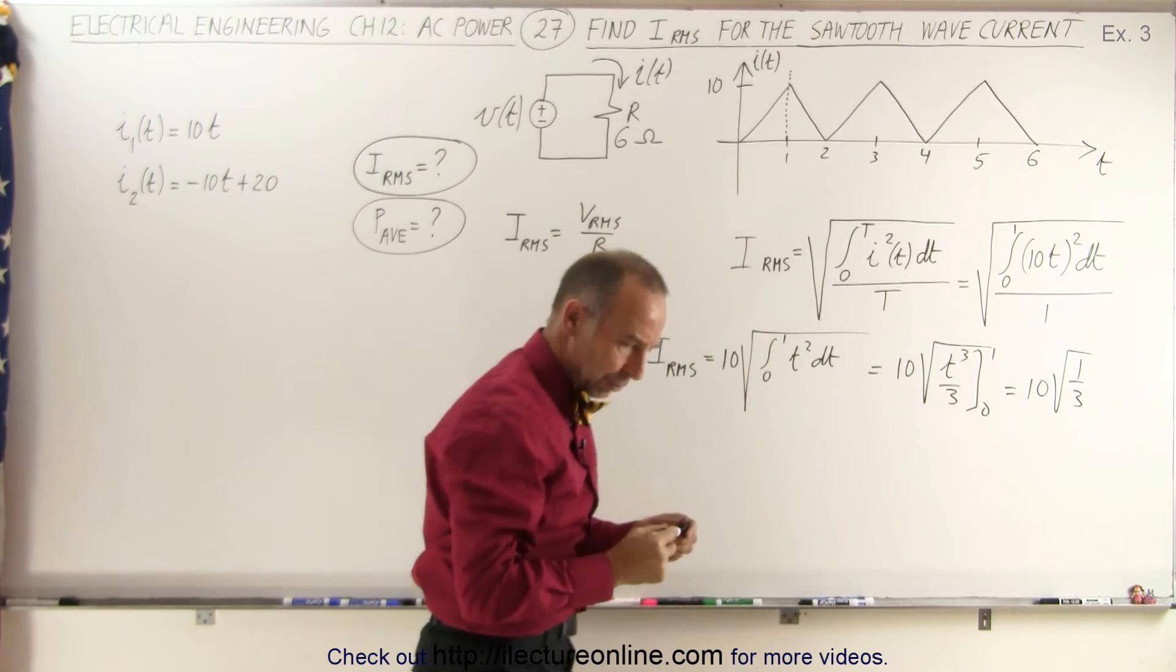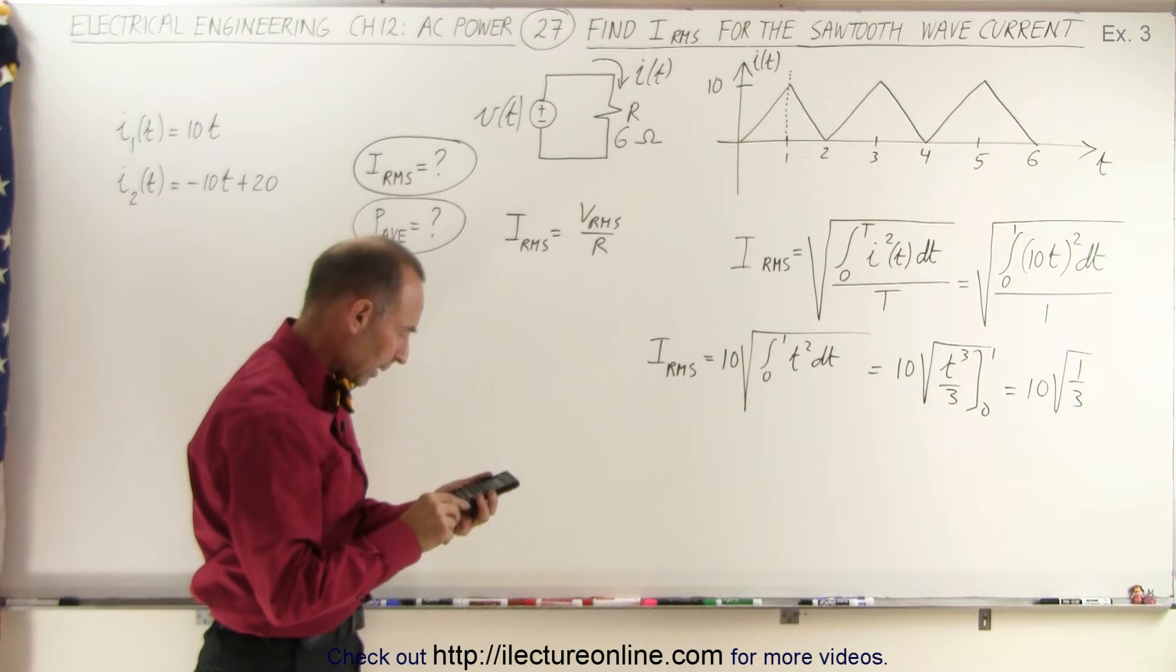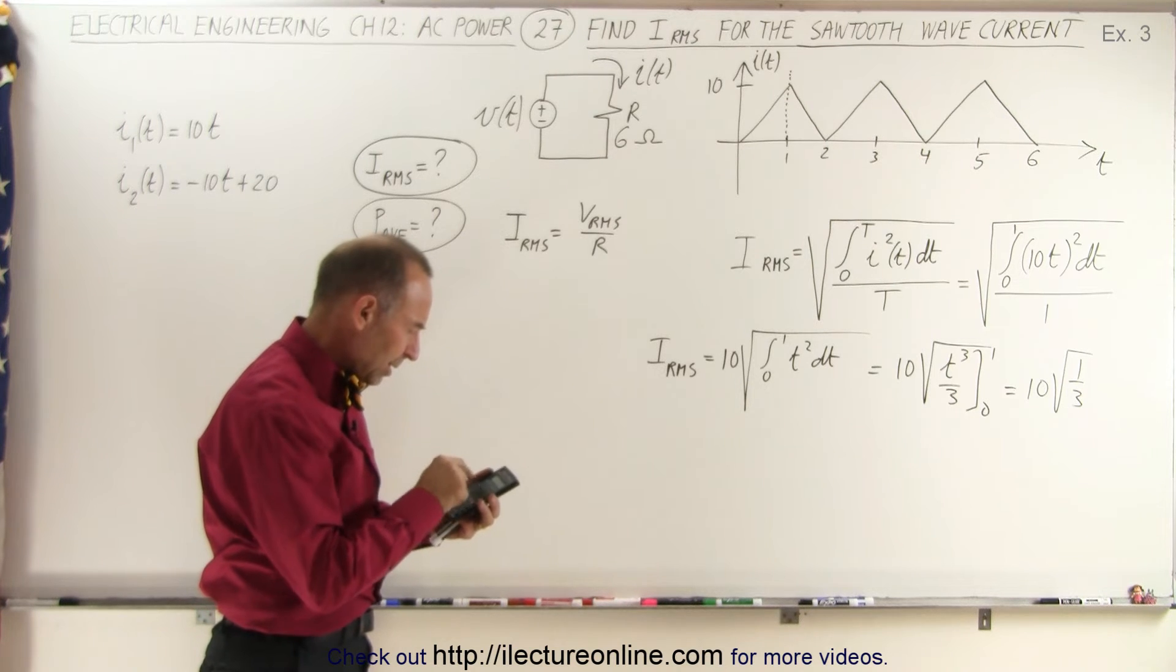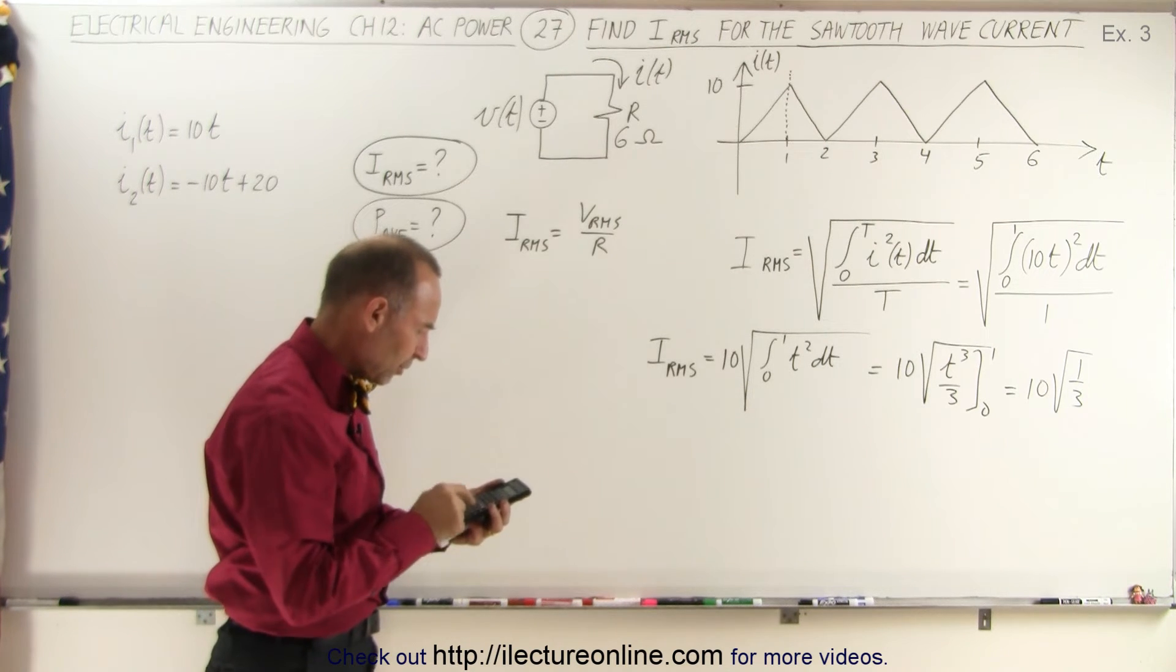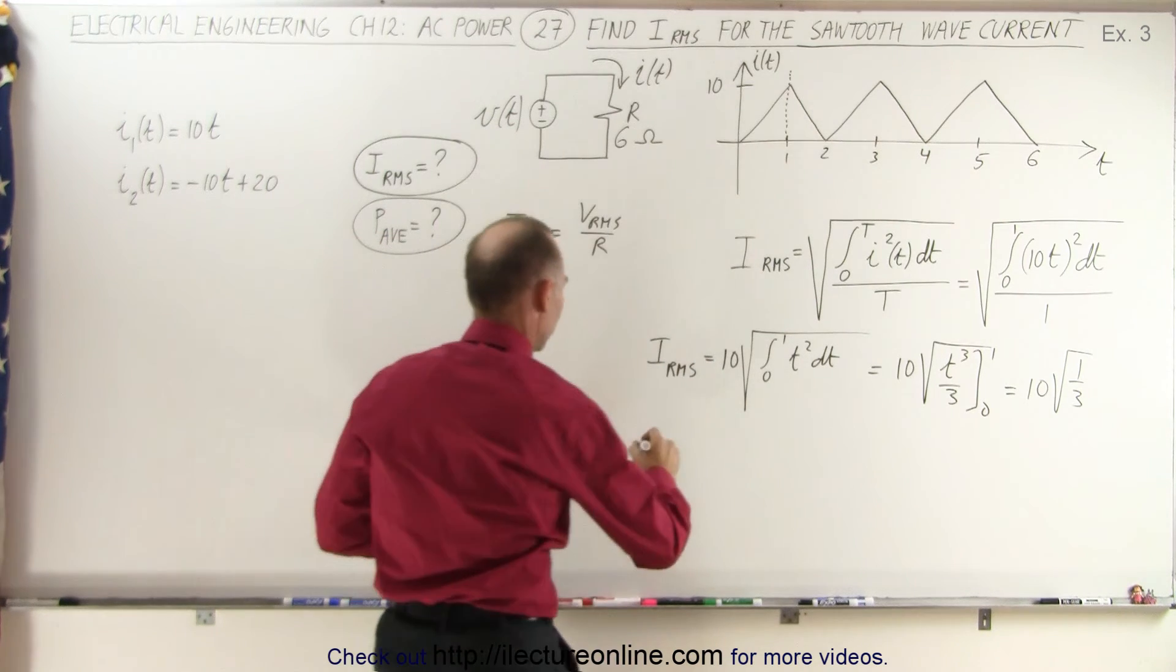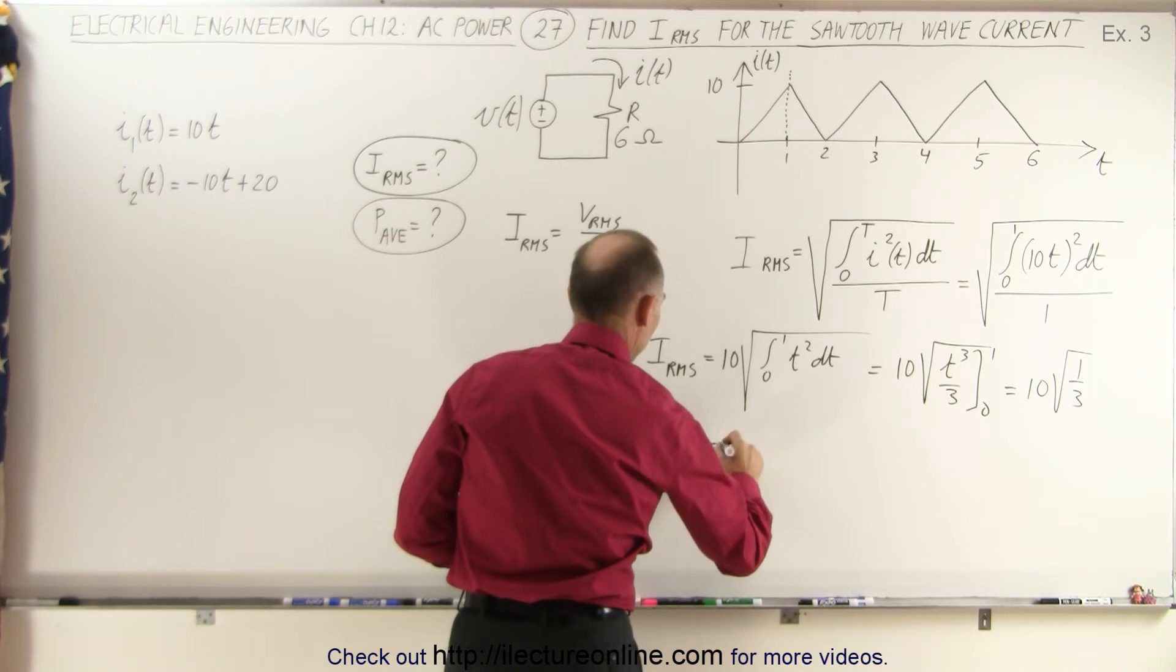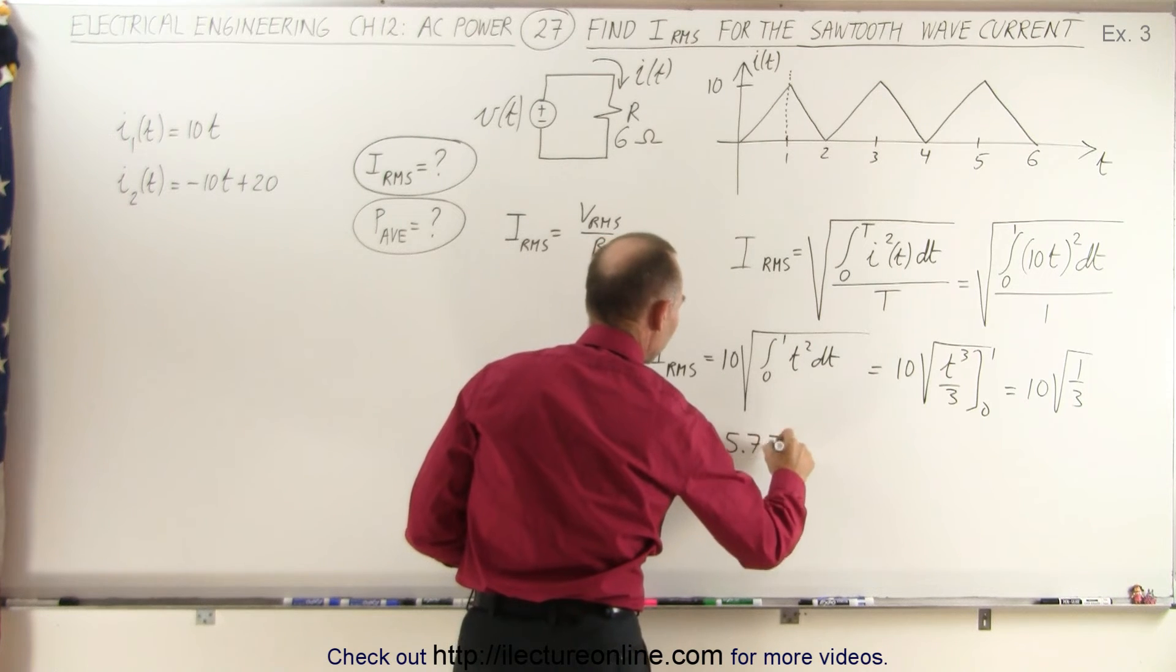We get one divided by three, take the square root, times 10, which gives us 5.77. So I_RMS = 5.77 amps.